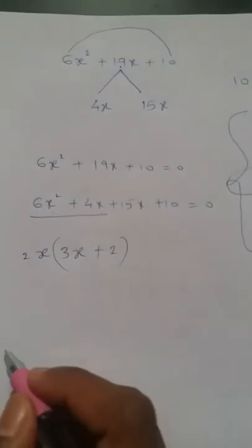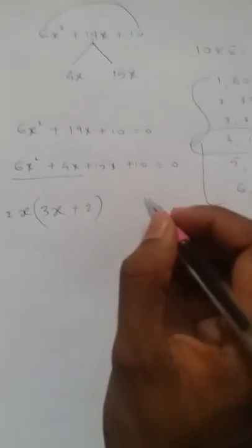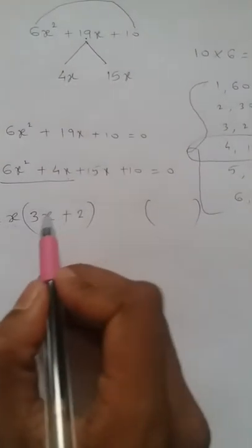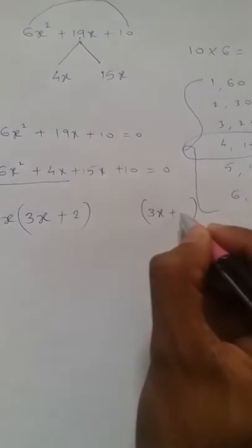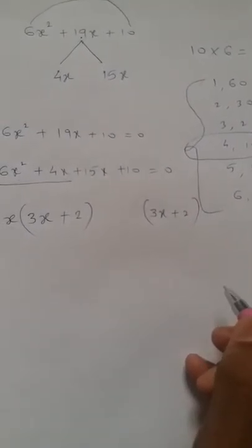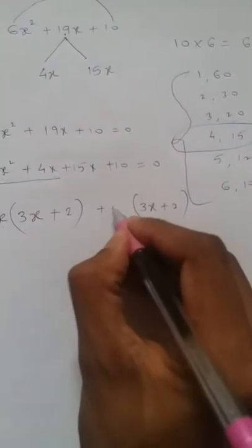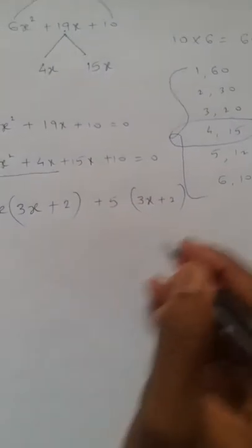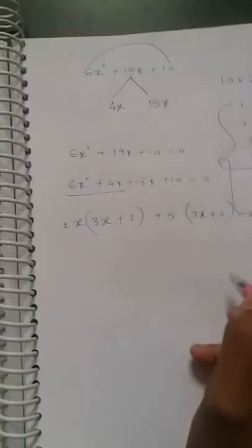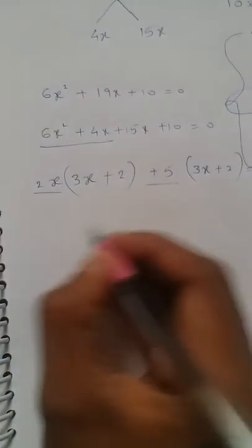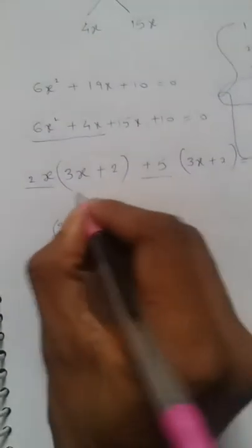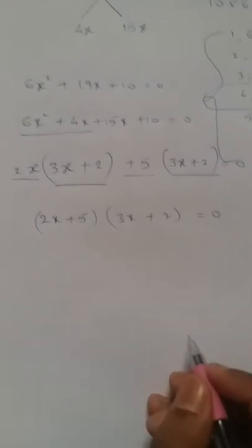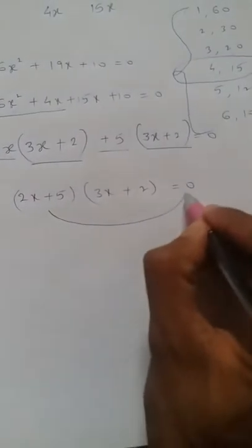Next, here also something we need to take common. After taking out that common we need to get the same numbers, which are 3x + 2 in the bracket. So which number will we take out common then? Plus 5, because 5×3=15 plus 5×2=10, equals 0. Now here 2x + 5 is one factor into 3x + 2 is one factor, which equals 0.